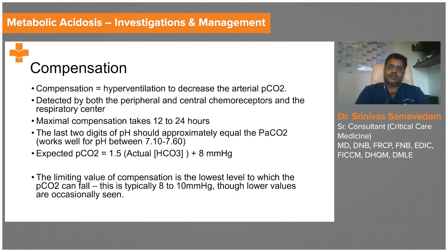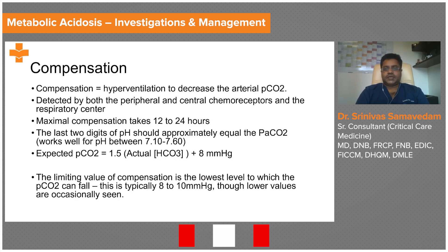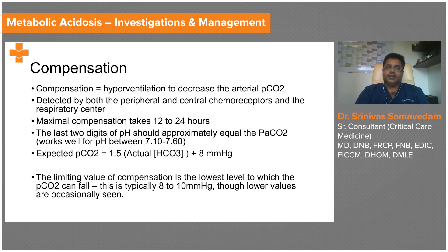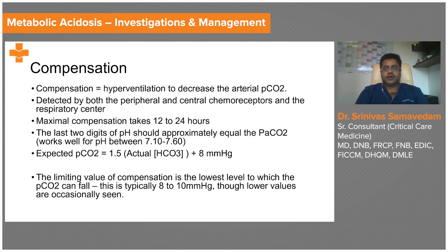Once you know there is a metabolic acidosis, the respiratory system compensates through Kussmaul's respiration. We should know whether this compensation is adequate or not. Compensation acts by decreasing arterial CO₂ so that the pH comes back toward normal. The acidic pH is detected by both peripheral and central chemoreceptors in the respiratory center, making the response nearly instantaneous. Maximal compensation usually takes about 12 to 24 hours.